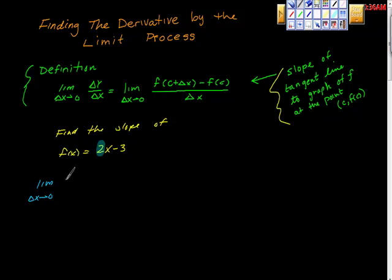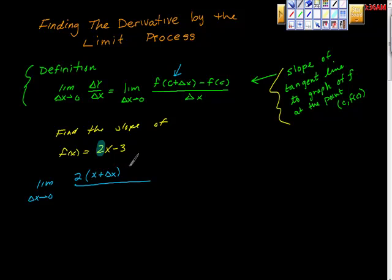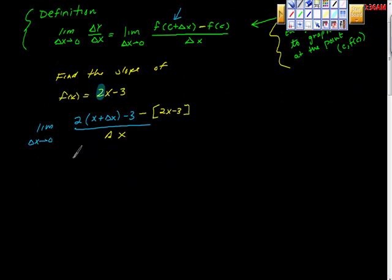We're going to say it's the limit as Δx approaches zero — professors are really tough about this notation. We plug in so that we get: [f(x + Δx) − f(x)] / Δx. The reason I'm not using c is because I want a general solution — the derivative anywhere. So we have 2(x + Δx) − 3 minus f(x), which is 2x − 3, all over Δx.